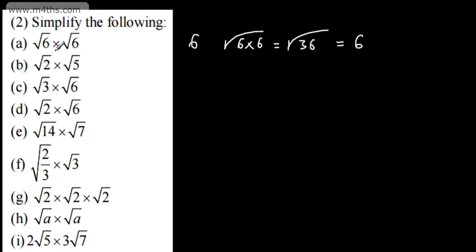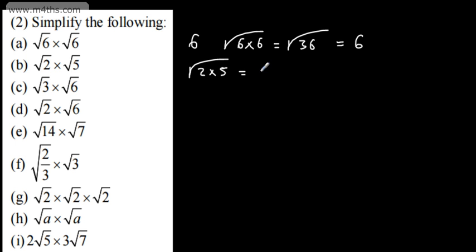With this one, we've got the root of 2 multiplied by the root of 5. Here we don't have A and A, we have A and B. So we can write this as the root of 2 times by 5, and that would give us the root of 10, which is in its simplest form.